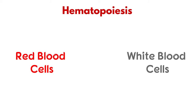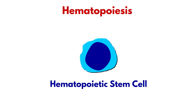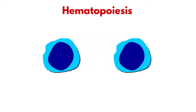Hematopoiesis is the formation and development of red and white blood cells from a type of cell called the hematopoietic stem cell. Hematopoietic stem cells are self-renewing, that is, they can multiply constantly to maintain their number.